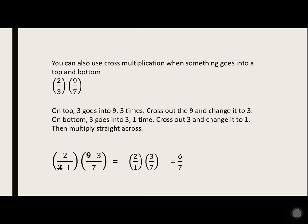3 goes into 9 three times. Cross out the 9 and change it to 3. On bottom, 3 goes into 3 one time. Cross out the 3 and change it to 1. Then multiply straight across: 2 times 3 equals 6, 1 times 7 equals 7.